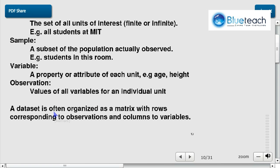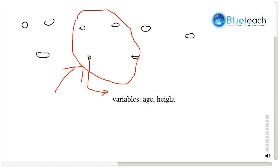So a dataset, once you have collected everything, it's called a dataset. And it's often organized as a matrix with rows corresponding to observation and columns to variables. So if you think about it, you're going to have student 1, student 2, student 3, etc. So it's in rows,